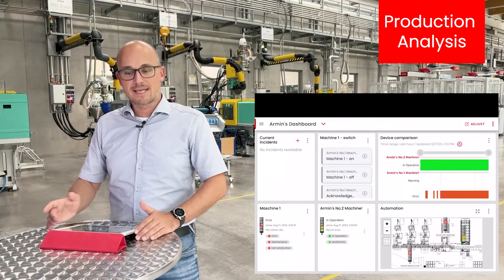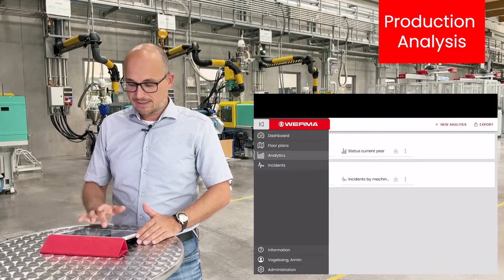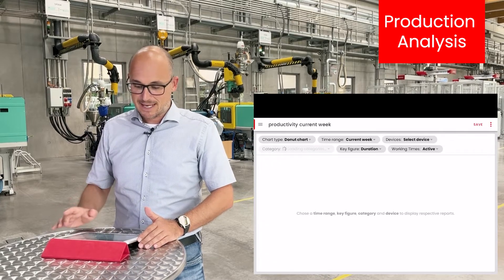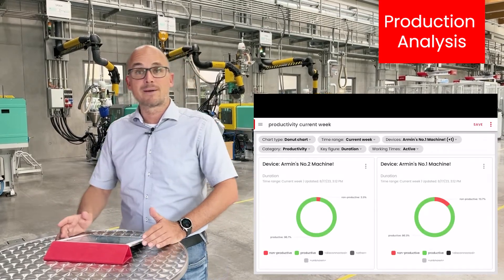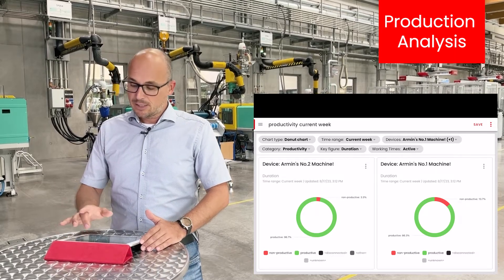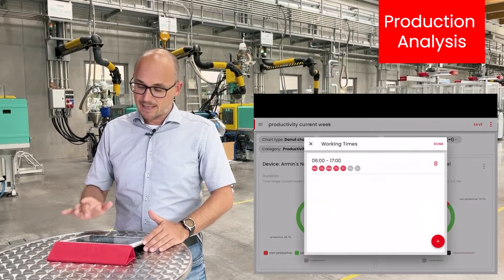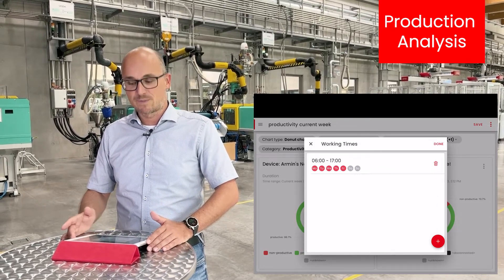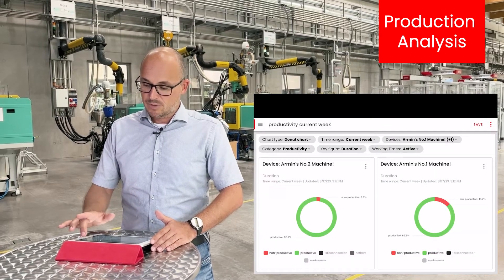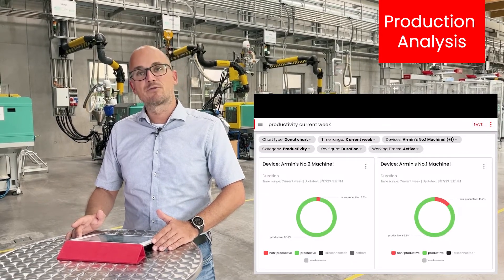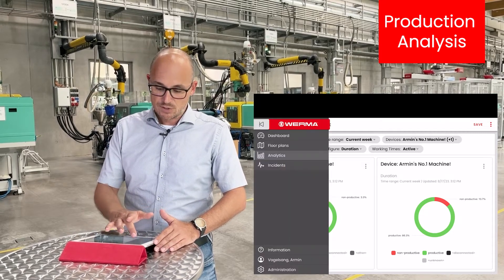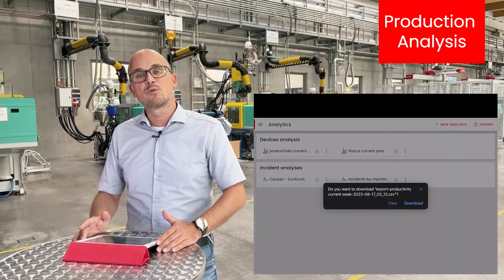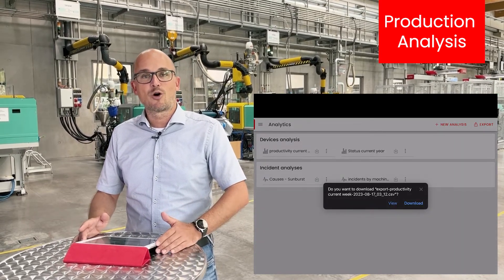In the analytics section of vAssist, you have the possibility to run reports on all your required KPIs. In this case, I created a productivity report for both of my machines for the current week. You also have the possibility to set up a working time filter that you could use if you want to analyze specific shifts or specific working hours. With one click, this specific report can be saved. It's also possible to download the raw data of that report in case you want to analyze it later in Microsoft Excel or in Power BI.